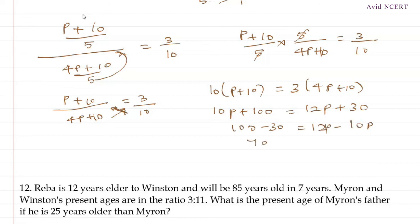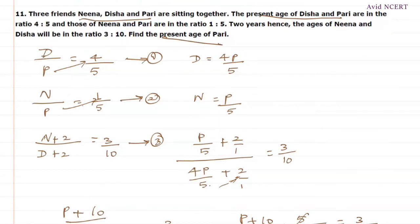So, 70 equals 2P. So, P equals 35. So, the present age of Pari is 35. With this we know that the present age of Pari equals 35.